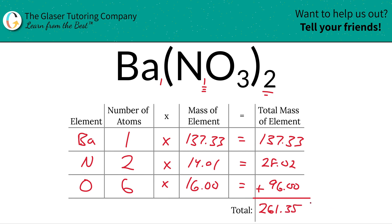Since we're finding molar mass, the units here are in grams per mole. And that's it. Now you know how to find the molar mass of barium nitrate. Thanks so much for tuning in. I do hope this helped. Like and subscribe if you can, and I'll see you in the next video. Take care.